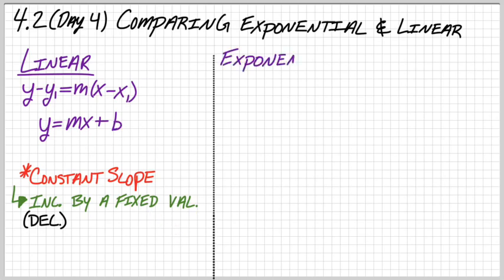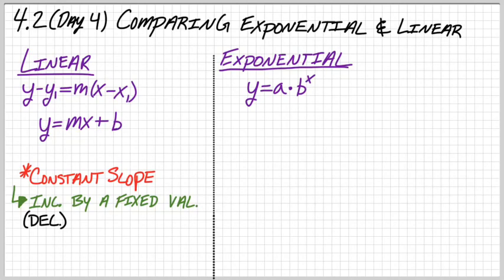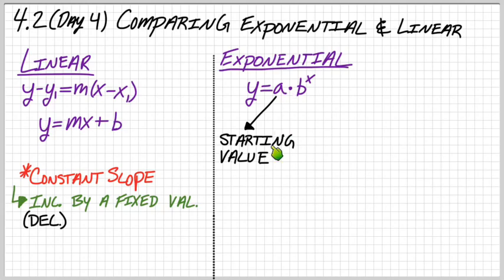For exponential functions, we have our equation: y equals a times b to the x. You should be able to identify a couple of those values by now. The value a is the starting value, or we call it the initial value. Graphically, that's actually the y-intercept also, so the a value gives you the y-intercept.